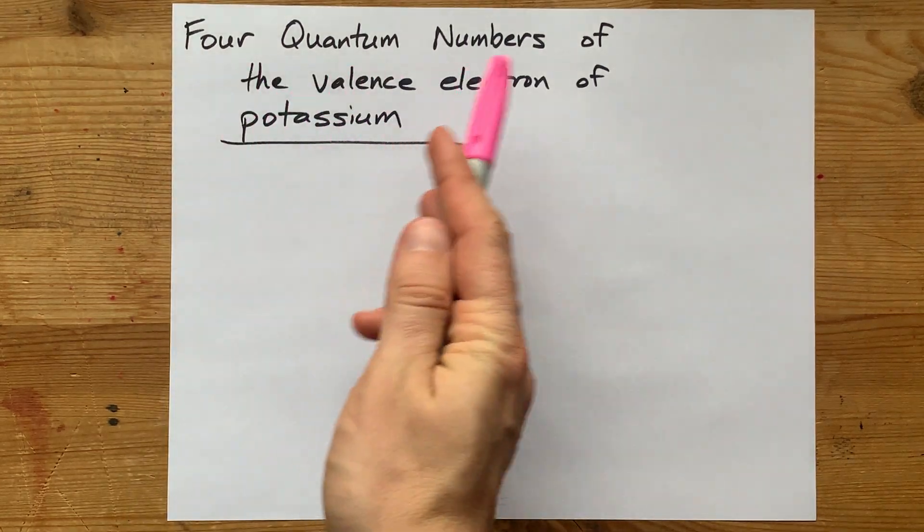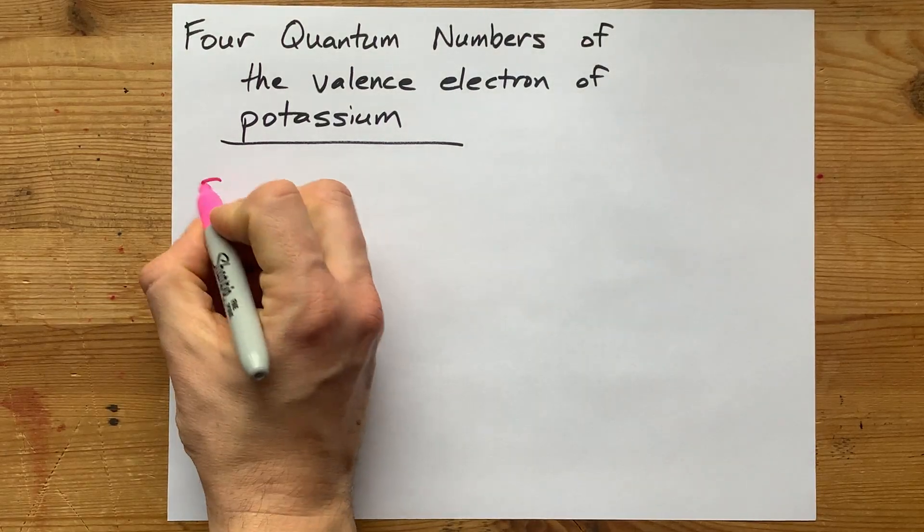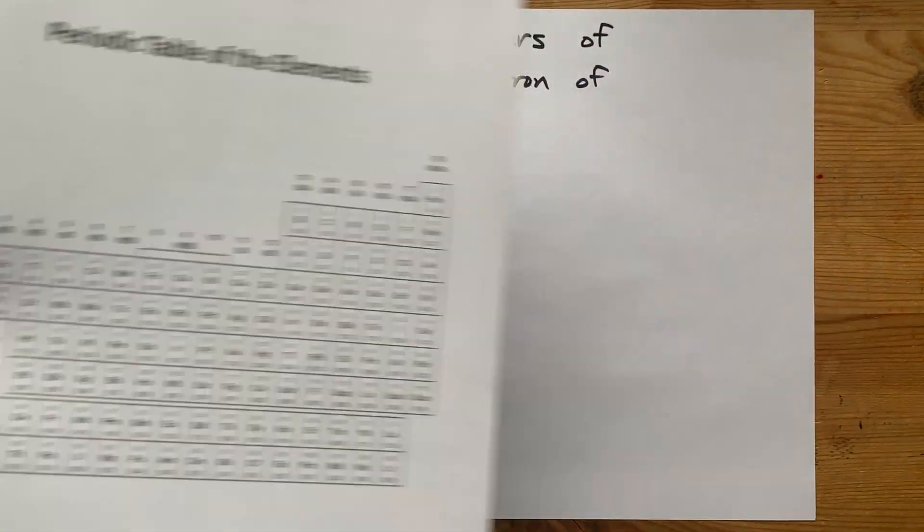How do you find the four quantum numbers for the valence electron of potassium? I'm going to show you my shortcut method right off the bat, then I'll show you the longer way in just a moment.